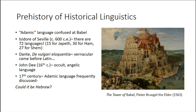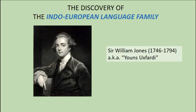Two important Enlightenment thinkers were skeptical: Robert Boyle, one of the founders of the Royal Society and formulator of Boyle's Law, and John Locke, the famous philosopher and political theorist. They just didn't see Hebrew as the original language. And this is the state of the question when our hero comes onto the scene.